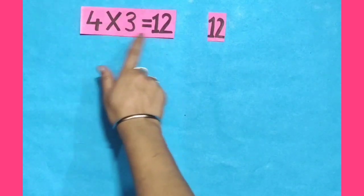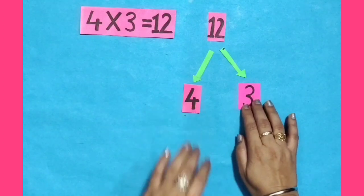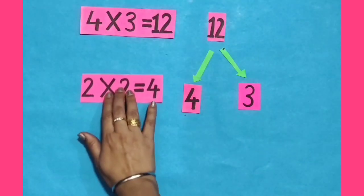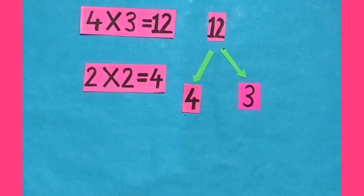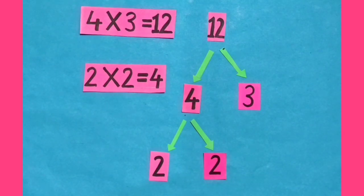Dear students, let's make a pattern of the factors of 12. 4 × 3 = 12, that means 4 and 3 are factors of 12. We can see that 3 comes only in the tables of 1 and 3. But 4 can be represented as 2 × 2 = 4, which means these are the factors of 4. In this pattern, we will represent them as 2 and 2 — both digits are the same. Dear students, now we will follow the same pattern while doing the next sum of exercise 3.1.